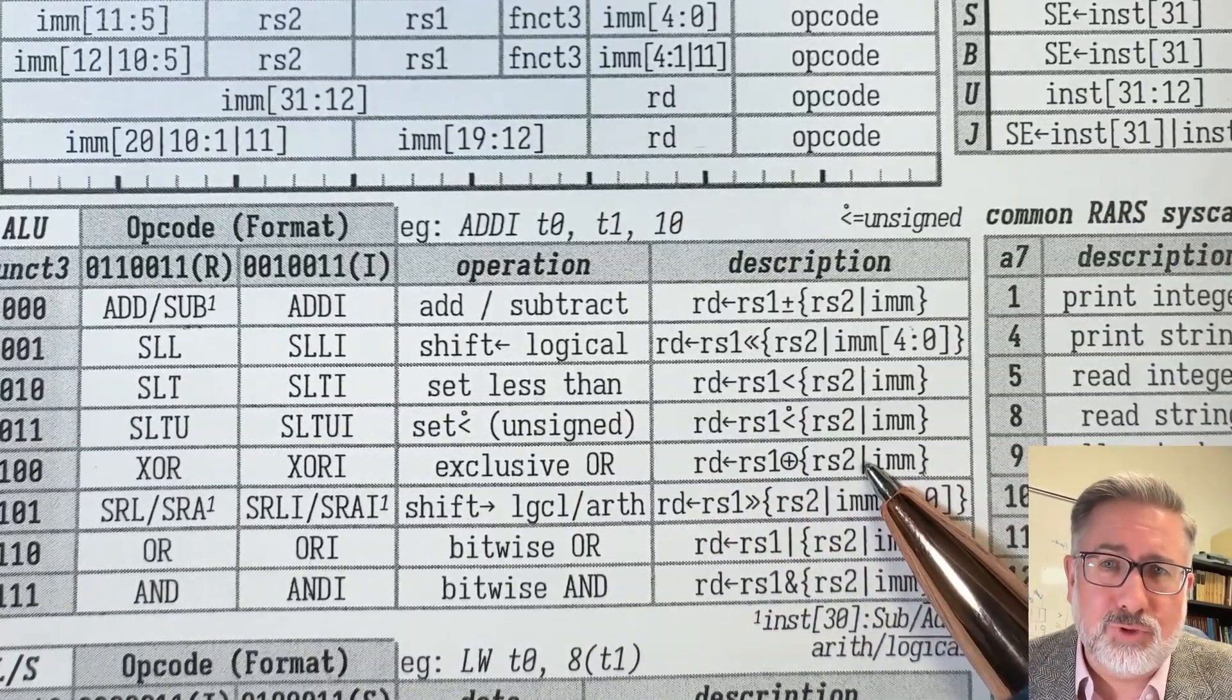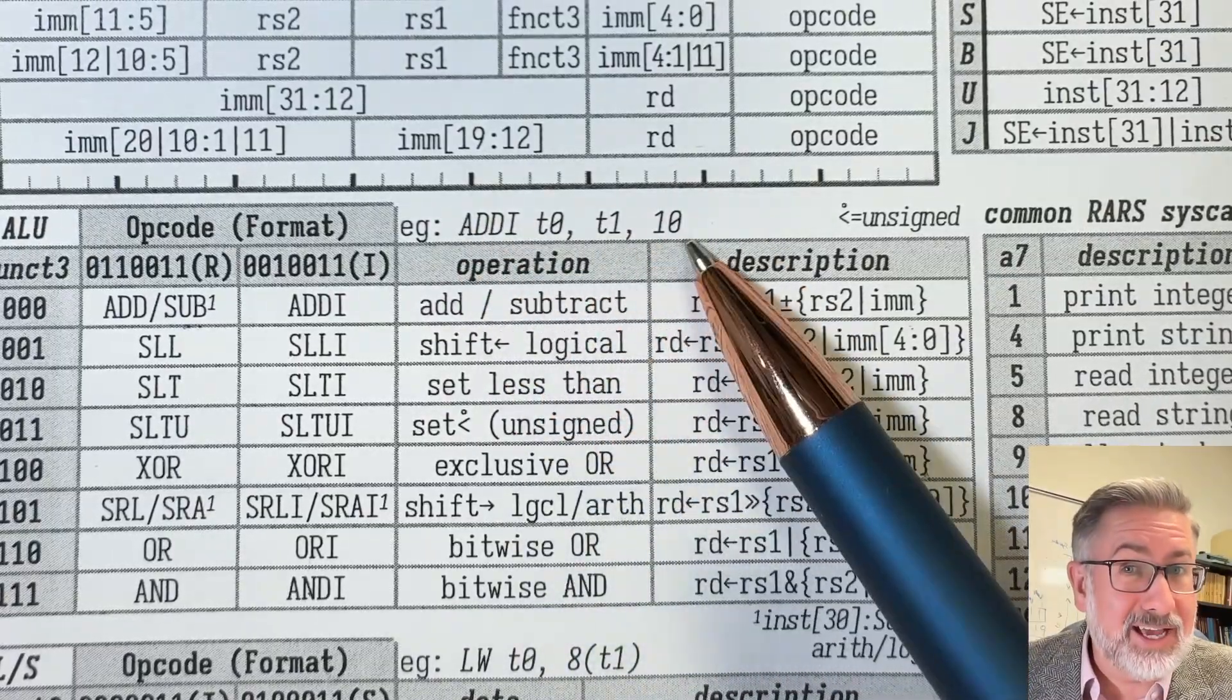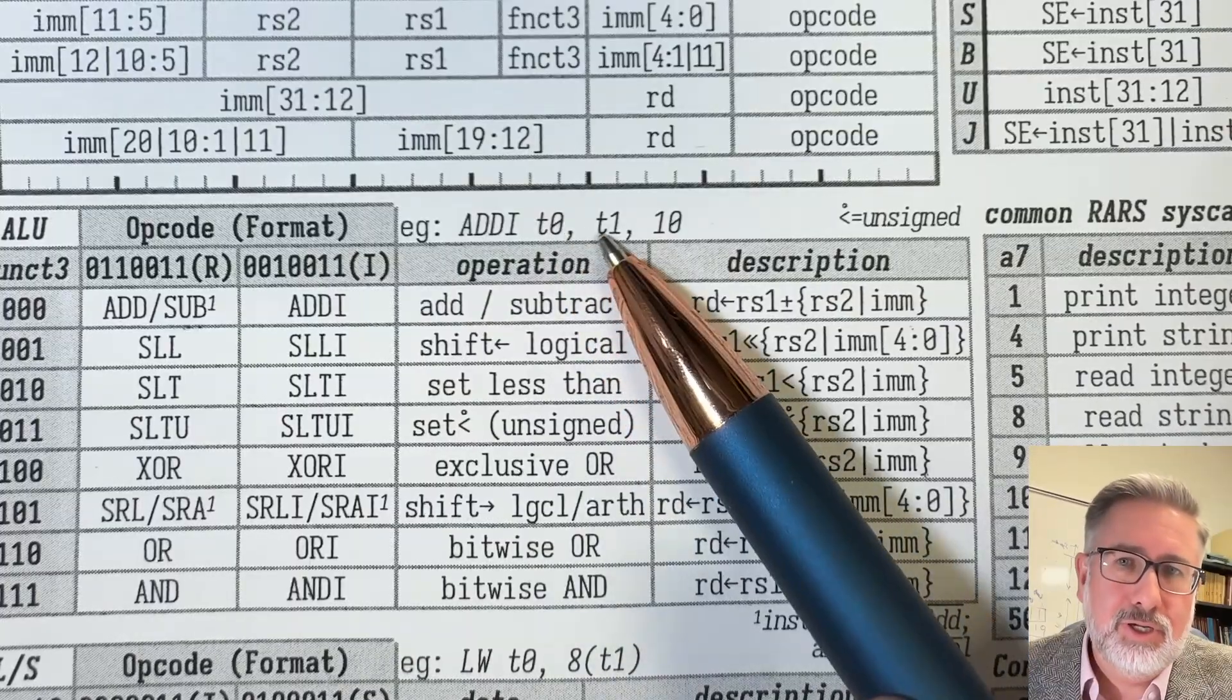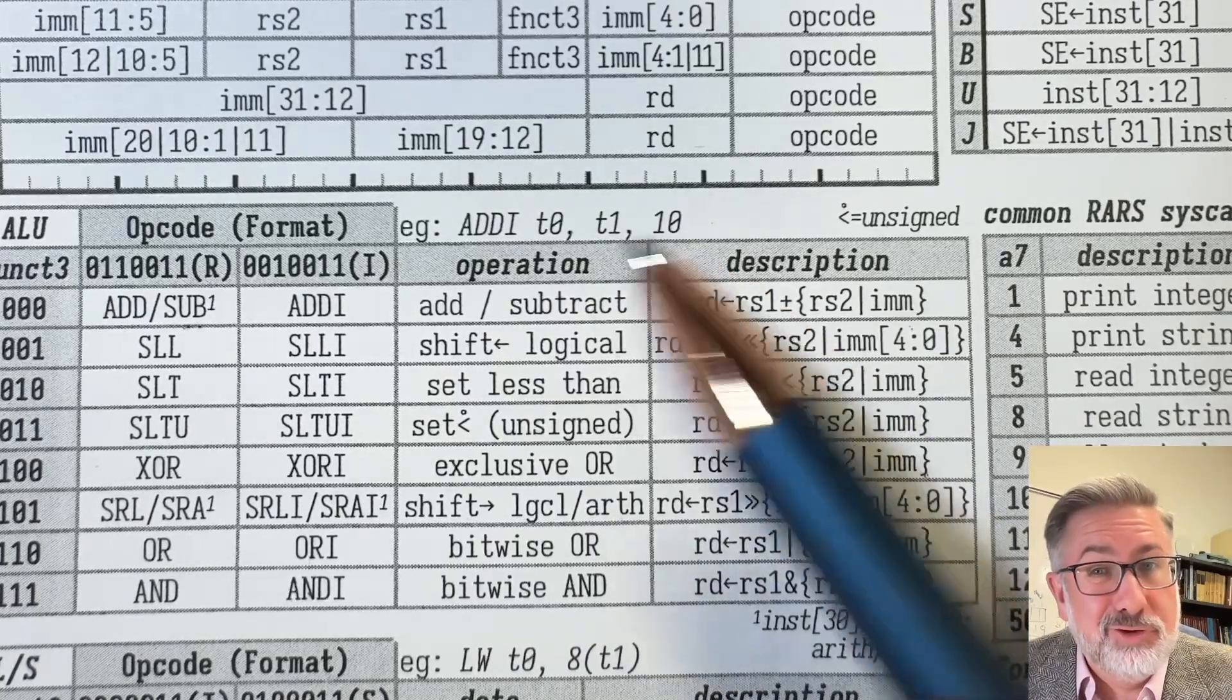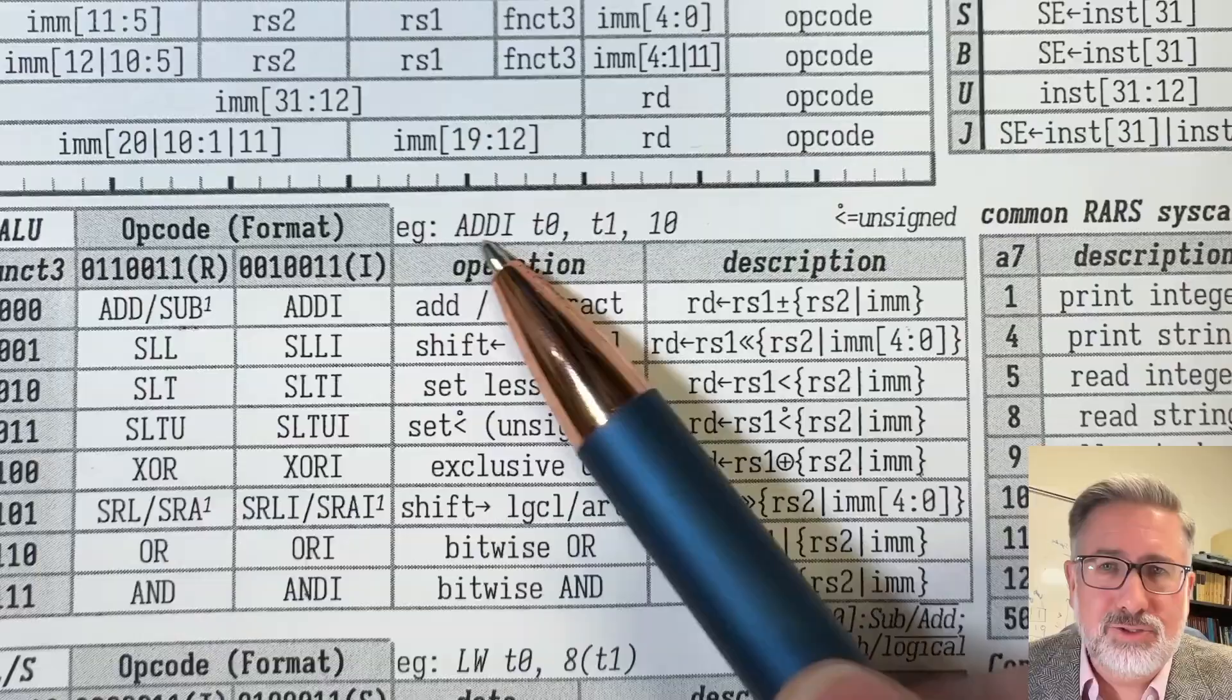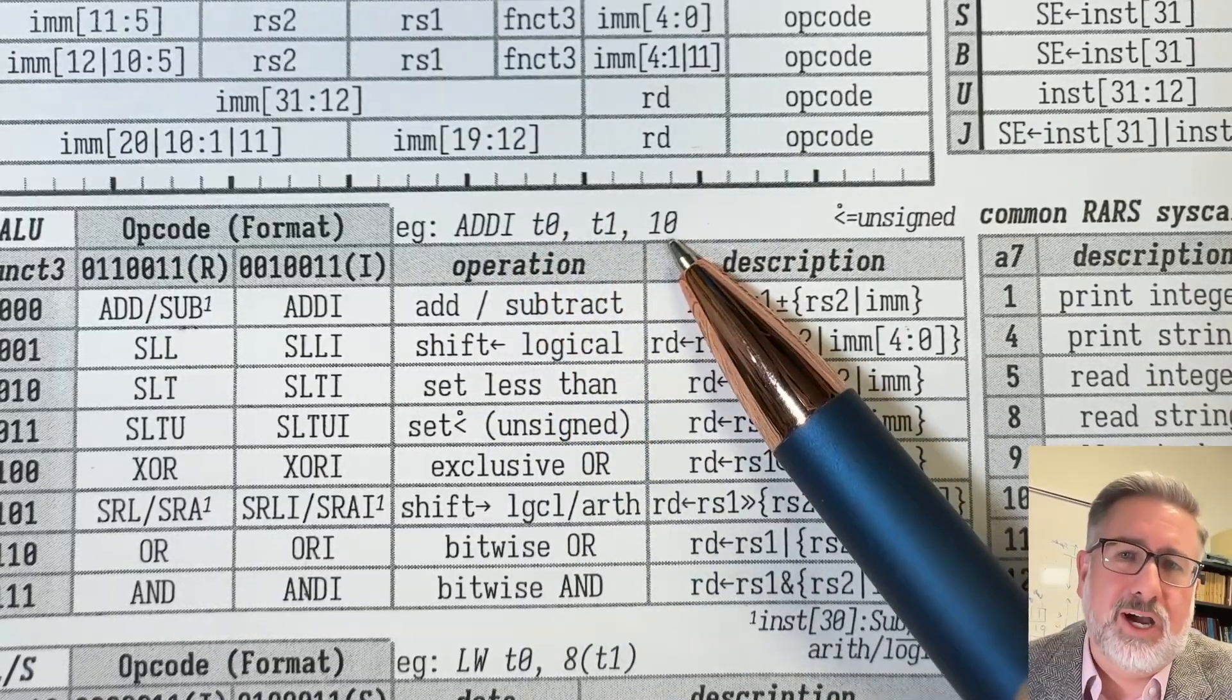But that's basically how this works. And up at the top here, I've got an example of how you would actually write that in assembly language. This one is add immediate into T0, value of T1, plus 10. So that's an example of the assembly language code for the add immediate instruction. And you can imagine the exclusive or would be exclusive or into register T0, T1, T5, whatever it is, whatever registers you're looking for.